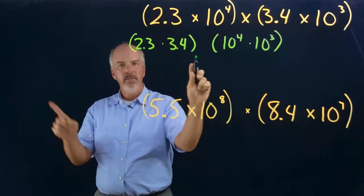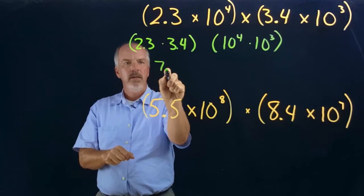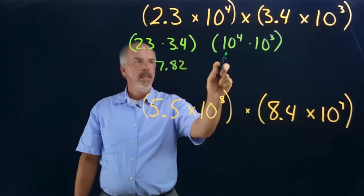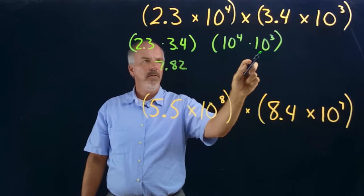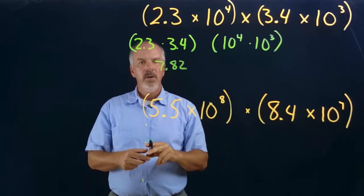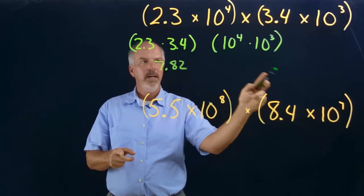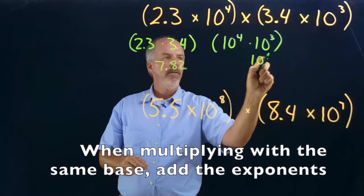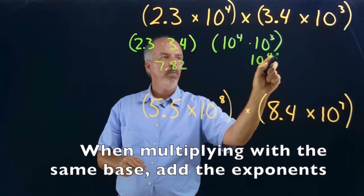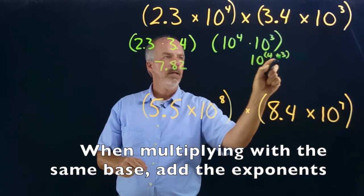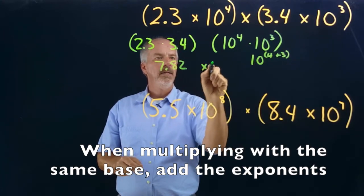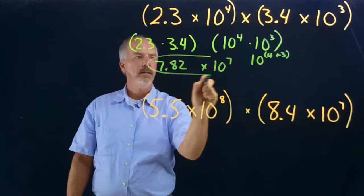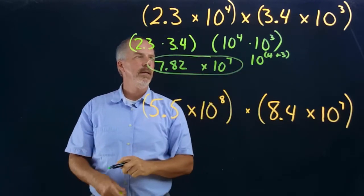So 2.3 times 3.4 gives us 7.82, and then 10 to the fourth times 10 to the third — remember from our video on exponents, when we multiply same-base exponents we add the powers — so that becomes 10 to the fourth plus 3, which is 10 to the seventh. So our answer is 7.82 times 10 to the seventh.